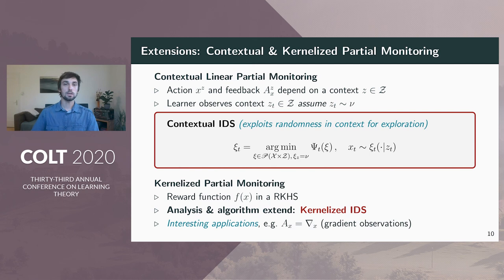The second extension is a kernelized version of partial monitoring, similar to kernelized bandits. Here, the reward function is contained in a reproducing kernel Hilbert space. This allows for many interesting applications, for example, where the learner obtains gradient feedback. And our framework also gives regret bounds for many more settings, for example, the kernelized dueling bandit setting.